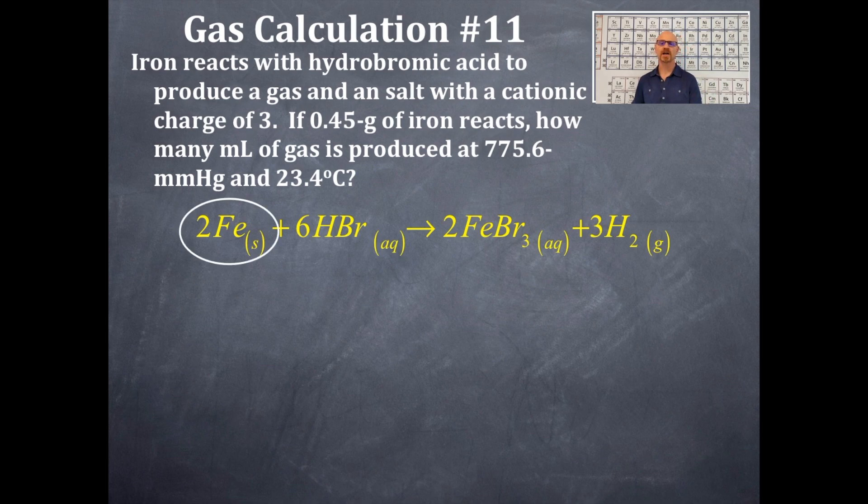If 0.45 grams of iron reacts, how many milliliters of gas is produced at 775.6 millimeters of mercury and 23.4 degrees Celsius? You should realize that this problem does not have STP conditions. So I don't have the option of using it under complete stoichiometry. I'm going to have to use the ideal gas equation for this one. I do need a balanced equation first. Here's our balanced equation. We're starting with the iron. What do we want? We want hydrogen. And then we're going to go from the iron to the hydrogen.